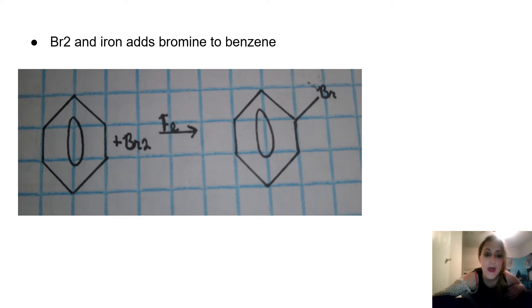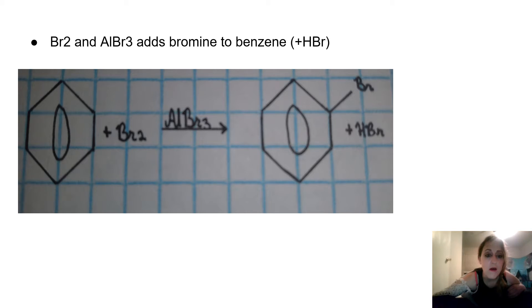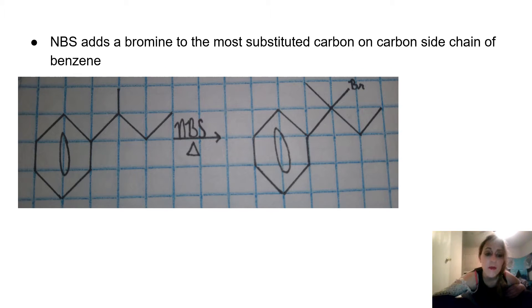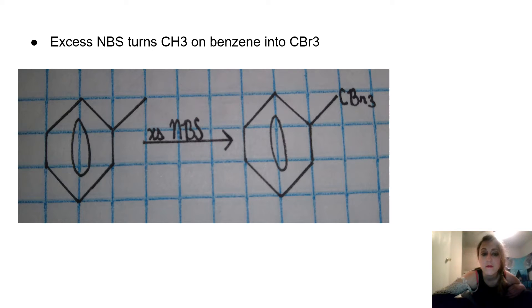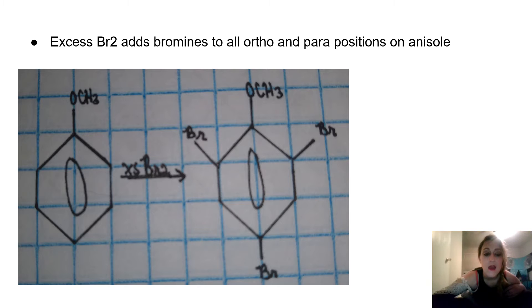Br2 and iron adds bromine to benzene. Br2 and aluminum bromide also adds bromine to benzene, creating HBr. NBS adds a bromine to the most substituted carbon on the carbon side chain of a benzene. Excess NBS turns CH3 on benzene into CBr3. Excess Br2 adds bromines to all ortho and para positions on anisole.